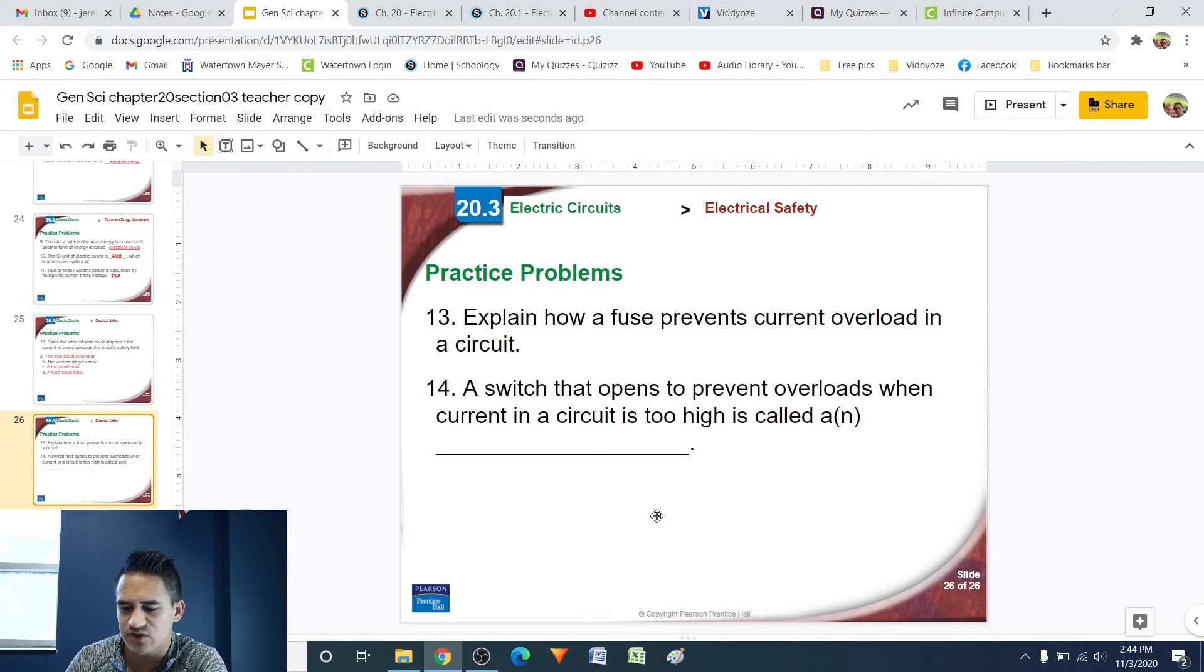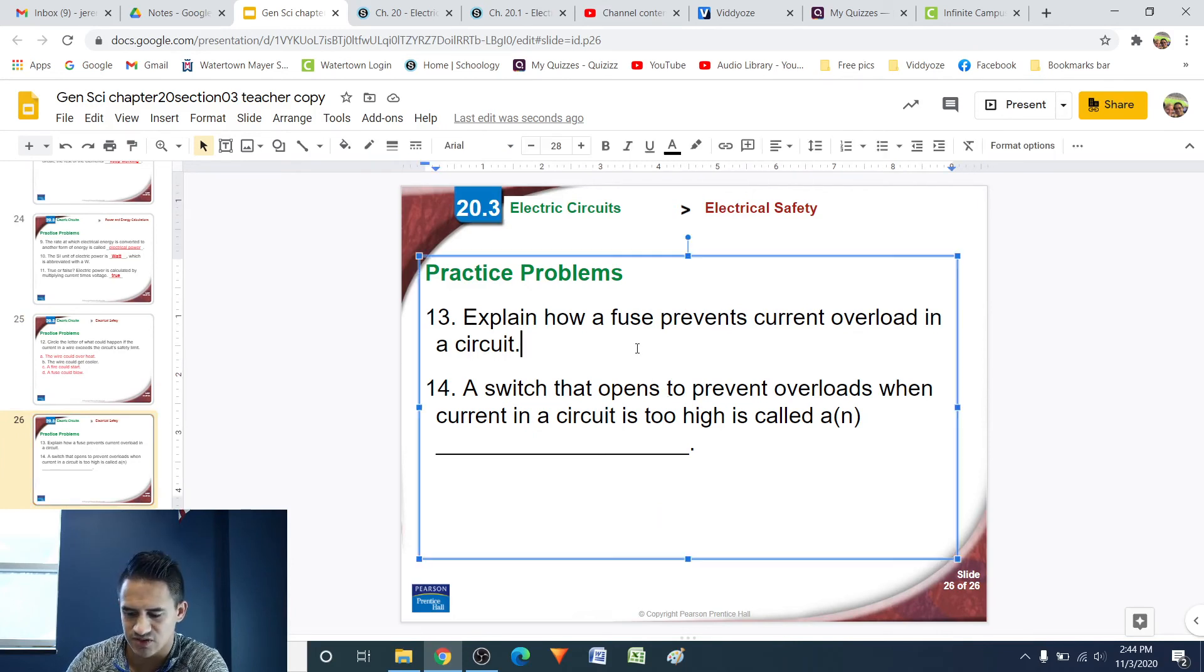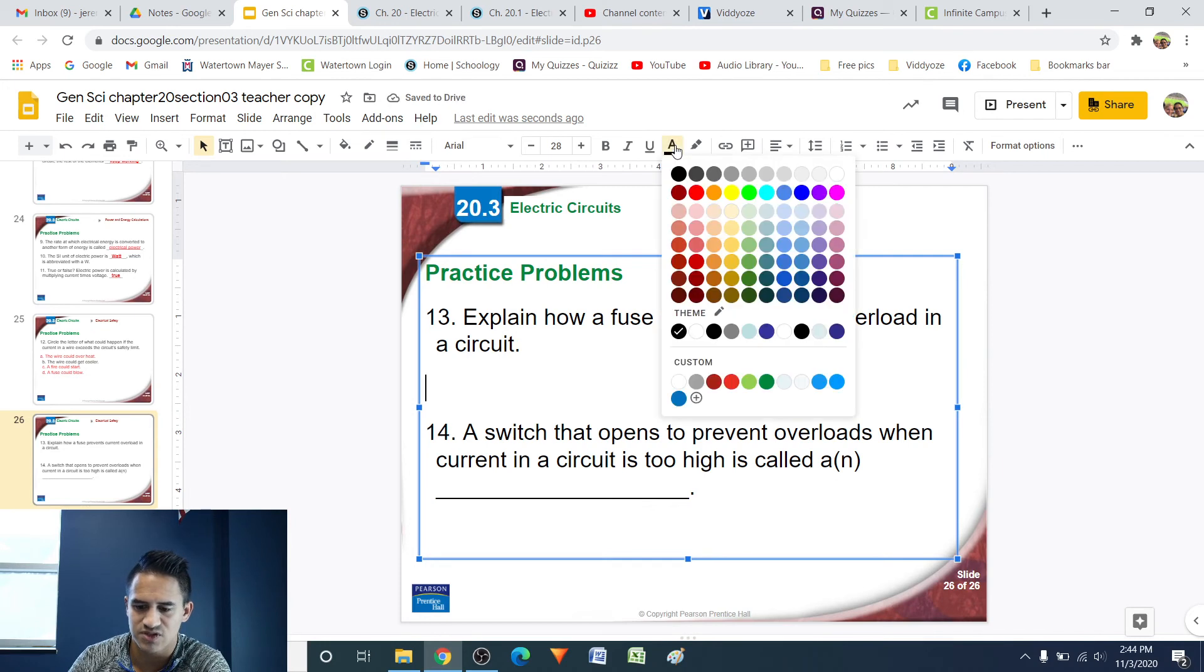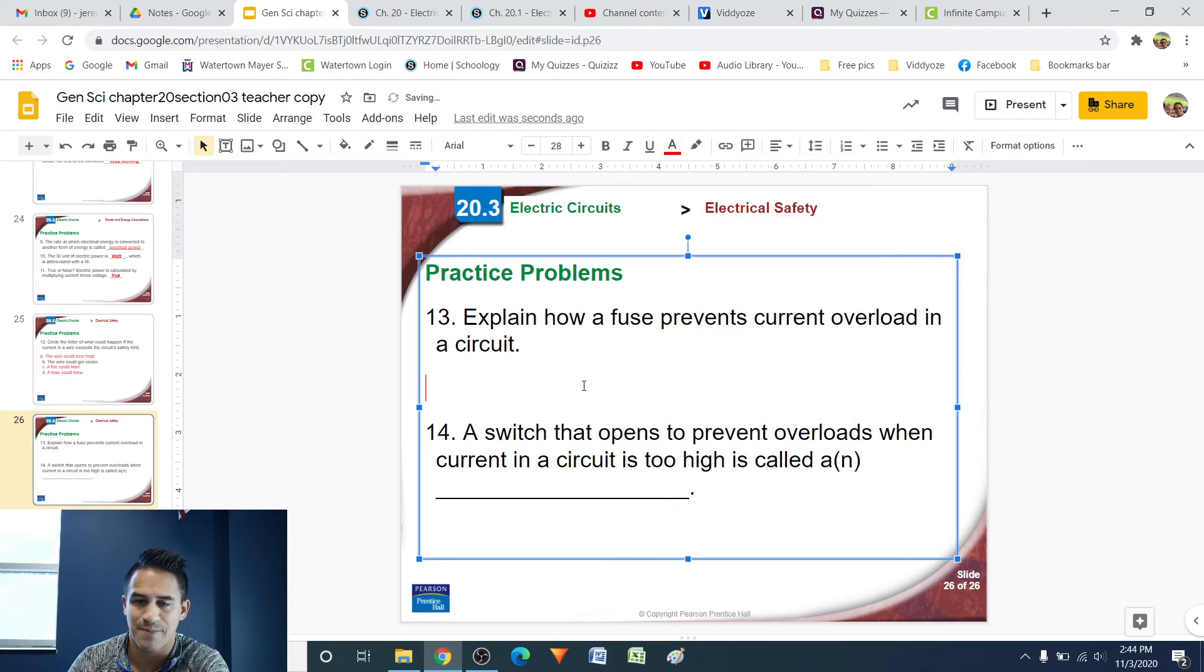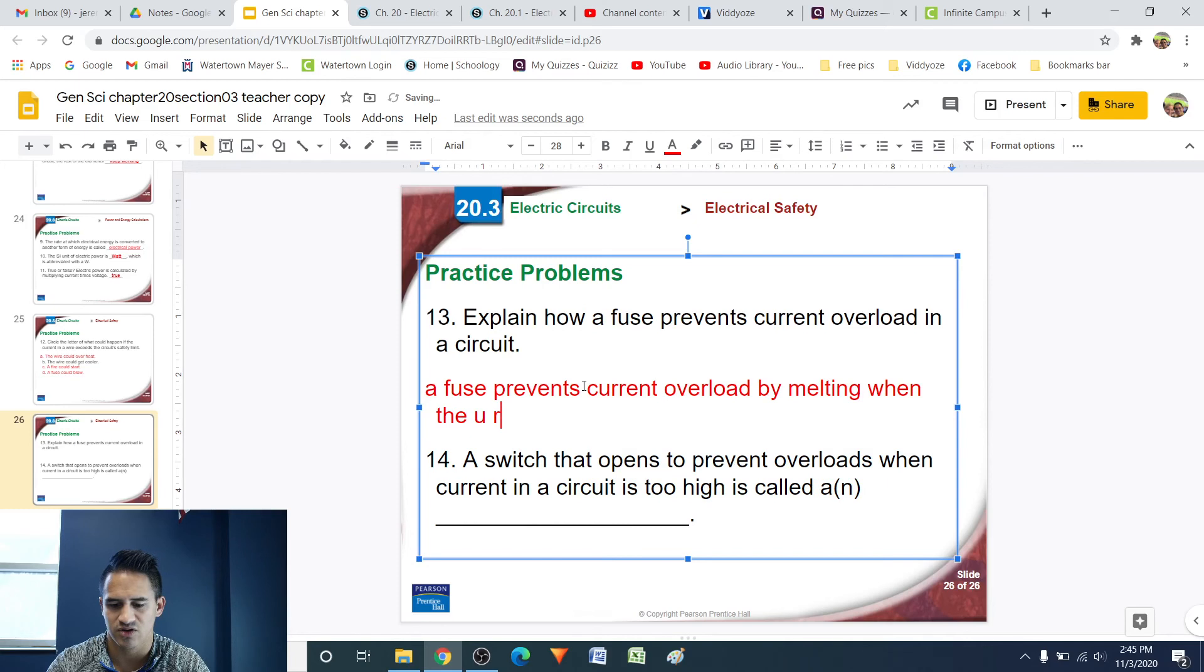Number 13. Explain how a fuse prevents current overload in a circuit. Alright. So, we're just talking about this. So, a fuse prevents current overload by melting when the current gets too high. You can say a fuse prevents current overload by melting when the current gets too high.